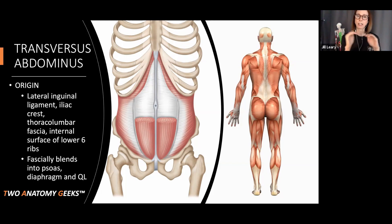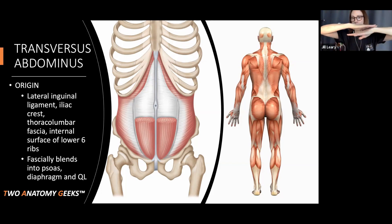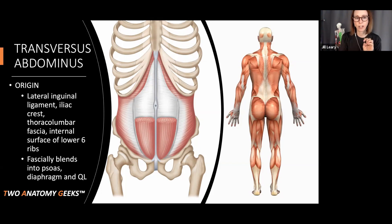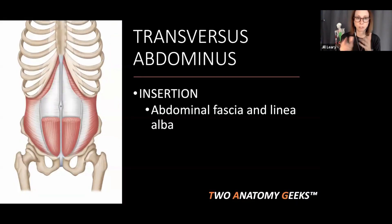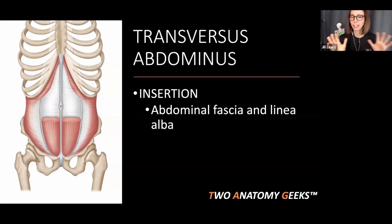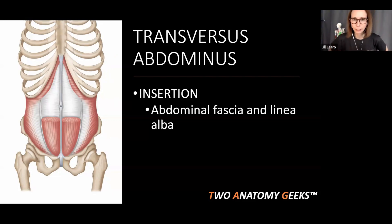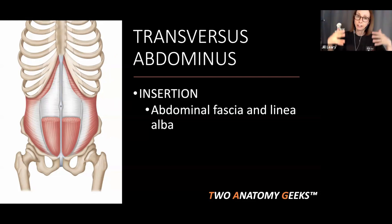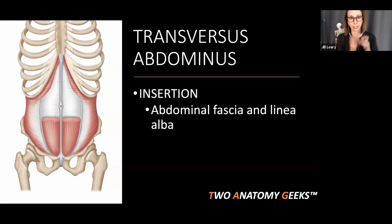It's the only muscle in our body that has a totally complete transverse fiber alignment — just like stripes going across. Its insertion: it fascially blends and goes all the way to the abdominal fascia and the linea alba. So it stops at the inguinal ligament as an origin, but the insertion comes all the way around to the front, finishing at the abdominal fascia and linea alba.